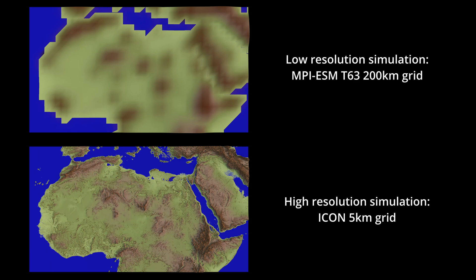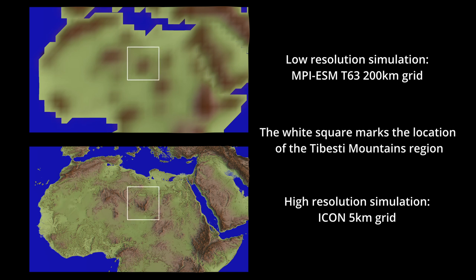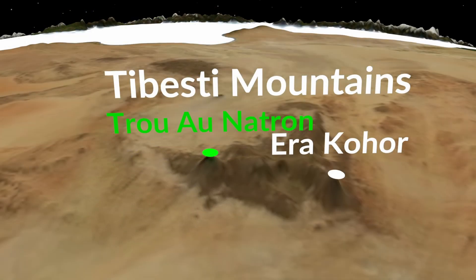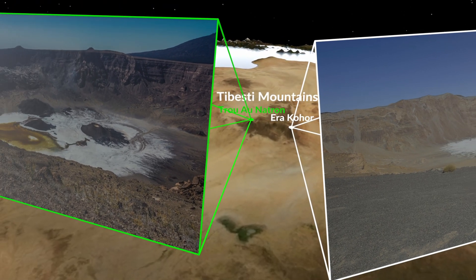Beside missing processes, the coarse horizontal resolution of these models, with grid cells around 200 km wide, limits their ability to capture detailed precipitation patterns and terrain features of regions like the Tibesti Mountains in Chad, the highest range in the Sahara. These volcanic peaks include two craters, Trou au Natron and Emi Koussi, which held deep lakes during the mid-Holocene.